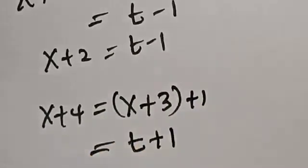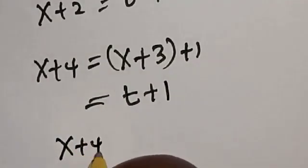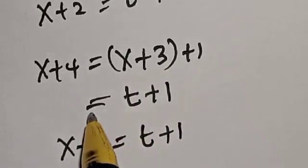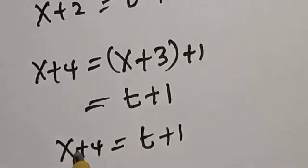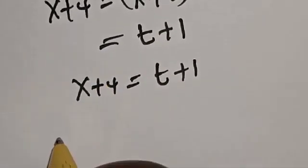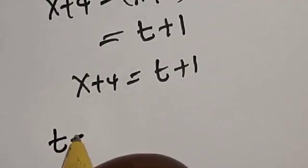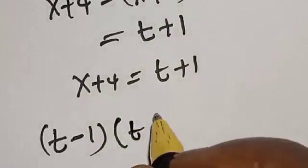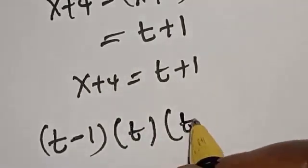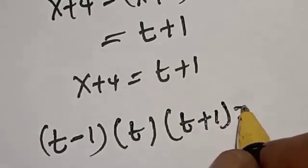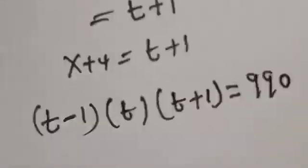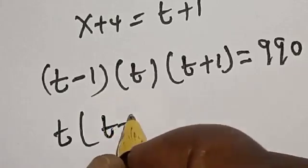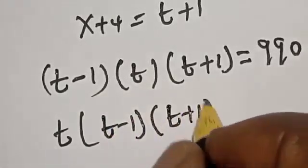s+4 = t+1. Therefore s+4 = t+1. Now let's substitute. We've found that s+2 = t-1, s+3 = t, and s+4 = t+1, so substituting: (t-1) × t × (t+1) = 990.